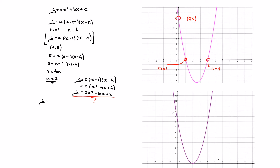Let's look at another example. Consider this parabola — again, since it's a parabola we know it has an equation y equals ax squared plus bx plus c. Looking at this curve, we see that it doesn't cut the x-axis twice but rather only touches it once, here at x equals two. This parabola also cuts the y-axis at eight, so the y-intercept has coordinates zero, eight.